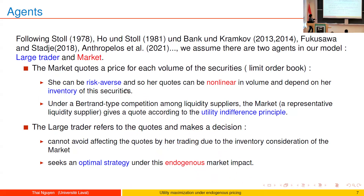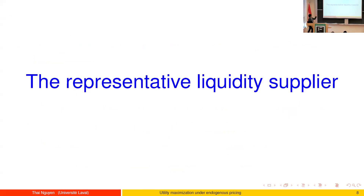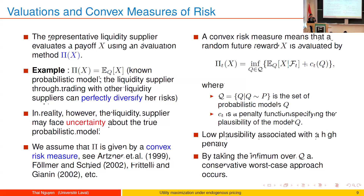On the other side, the large trader observes the quote and makes a decision. Of course she cannot avoid market impact due to inventory considerations by the market maker, but she can seek an optimal strategy if she wants to maximize, for example, her expected utility function. The market maker evaluates the price based on the whole inventory value.